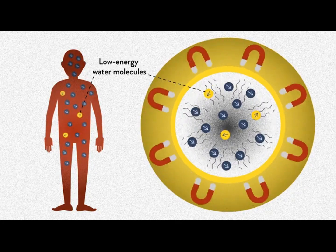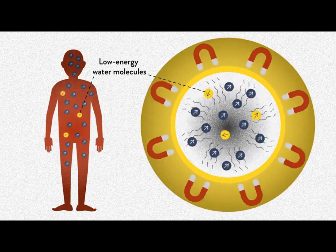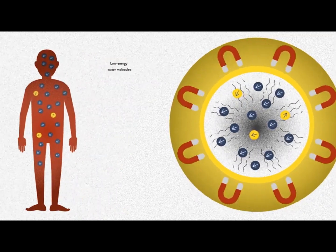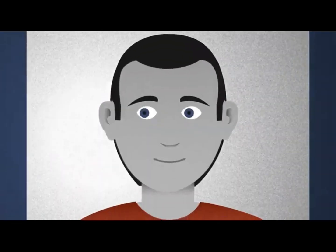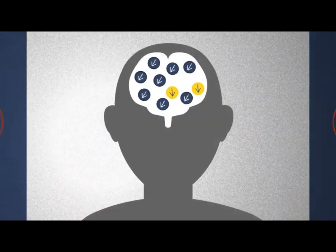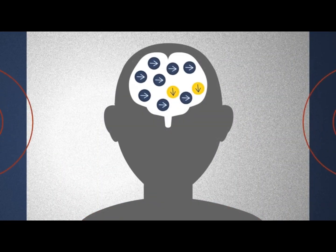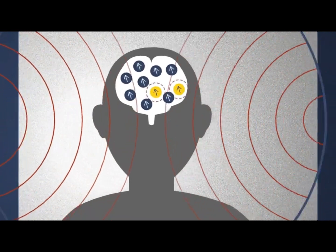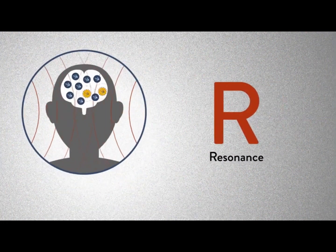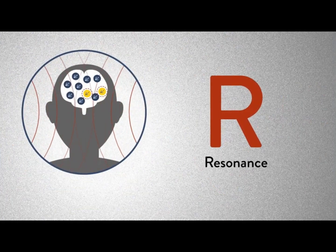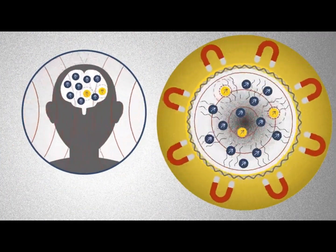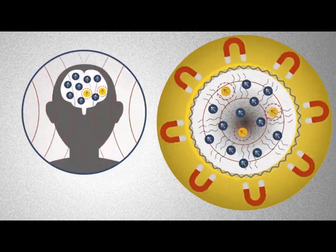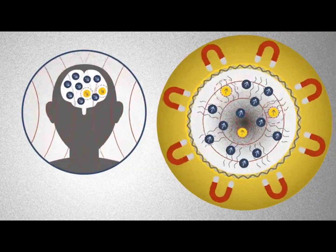To create an image of a body part, for example the brain, the machine focuses on the low-energy water molecules. Radio waves move at the same rhythm or frequency as the magnetic fields in an MRI machine. By sending radio waves that match or resonate with the magnetic field, the low-energy water molecules absorb the energy they need to move alongside the magnetic field.